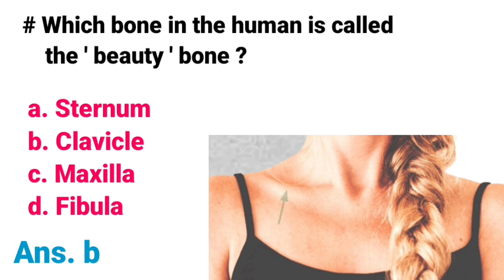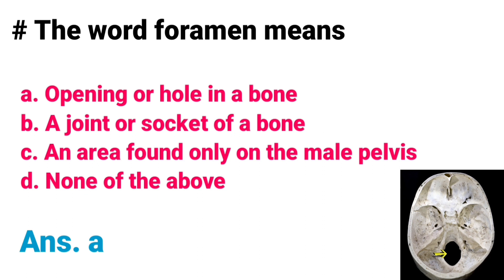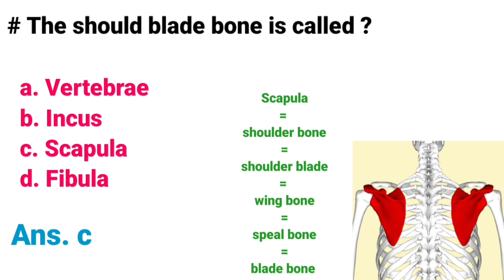The word foramen means: A) An opening or hole in a bone, B) A joint or socket of a bone, C) An area found only on the male pelvis, D) None of the above. Correct answer is option A, an opening or hole in a bone. An opening, hole, or passage especially in a bone is called a foramen.